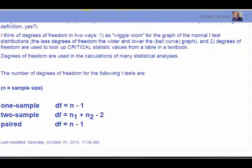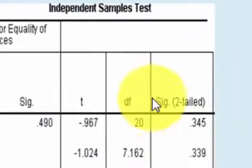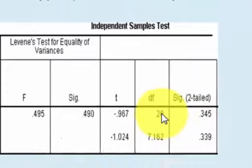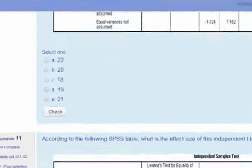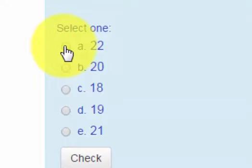So that's what this is. So if we have 20 degrees of freedom we simply add two. That means we have 22 people in this study.